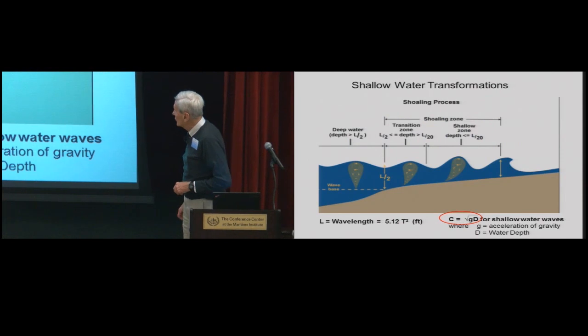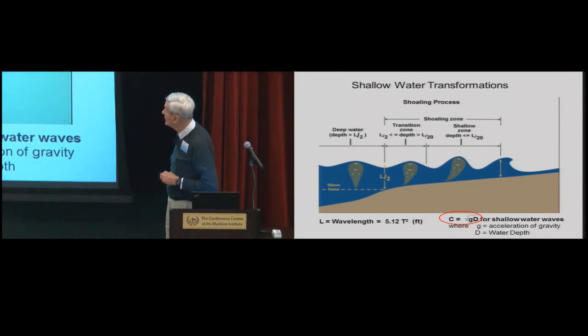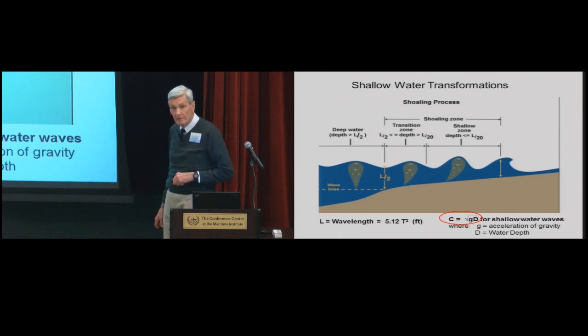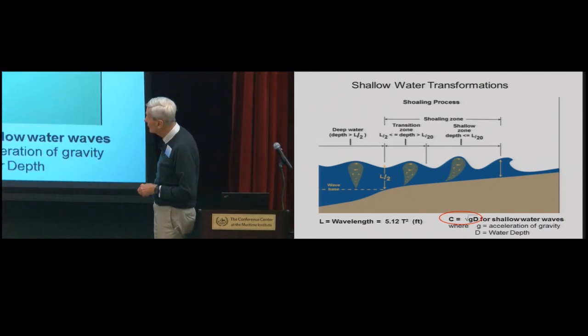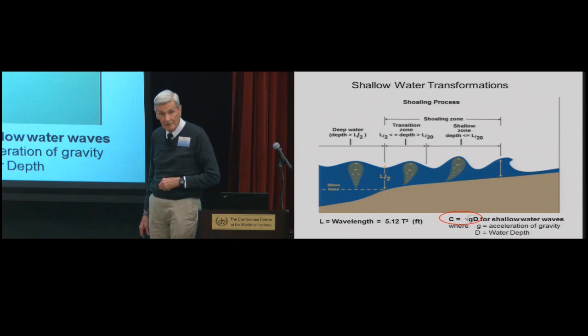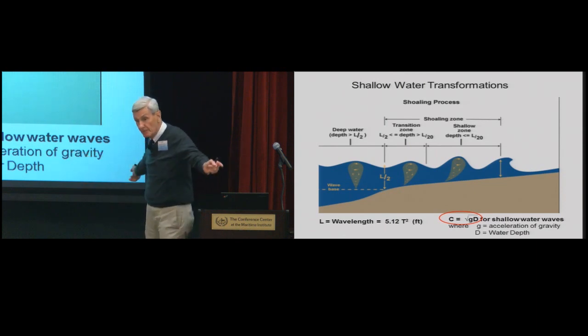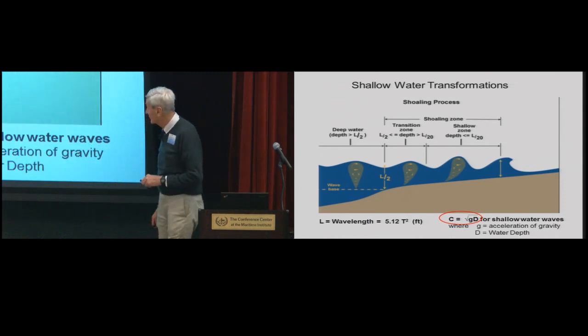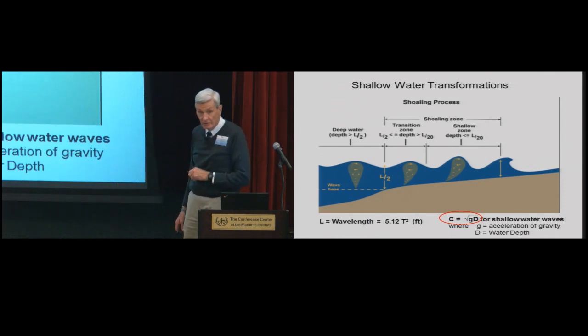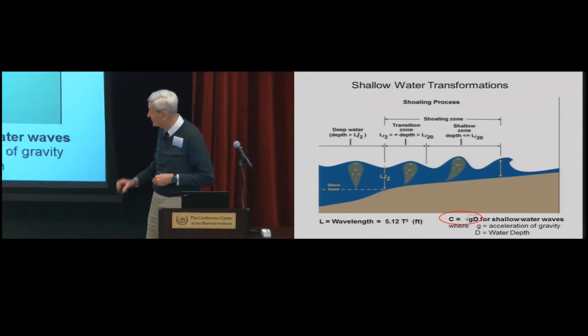We come inshore. This is the pattern you saw before. In here, the velocity of the wave is a function of water depth. So once you start feeling bottom, this L over 2, the speed of advance is a simple function of water depth. Which can significantly affect the patterns they refract due to water depth. And of course, the characteristics of the wave. It's shoaling, it's steepening, and the like.